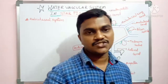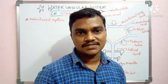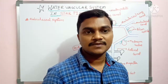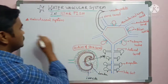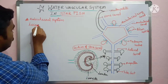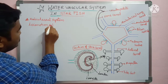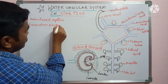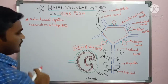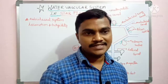The water vascular system, also called the ambulacral system, is mainly useful for locomotion. At the same time, it is involved in maintaining turgidity. So locomotion and turgidity are both functions of this water vascular system.